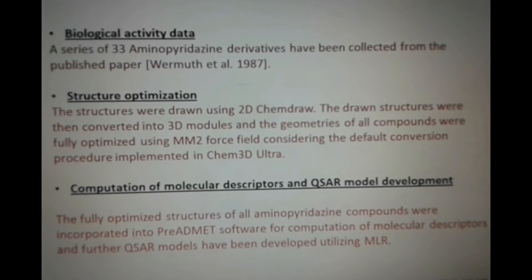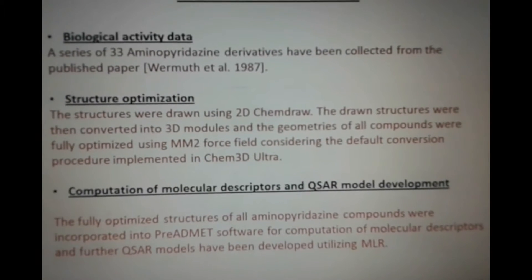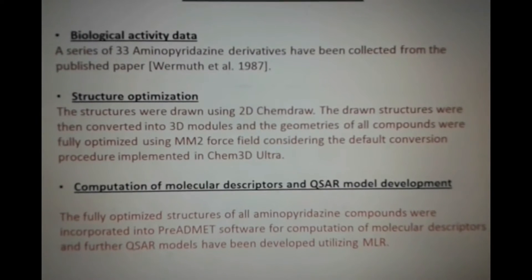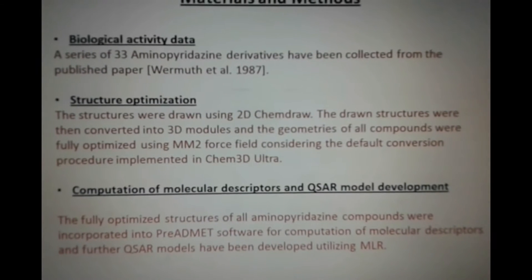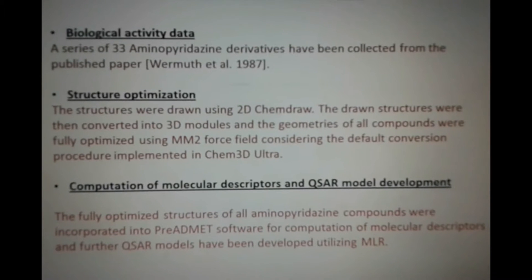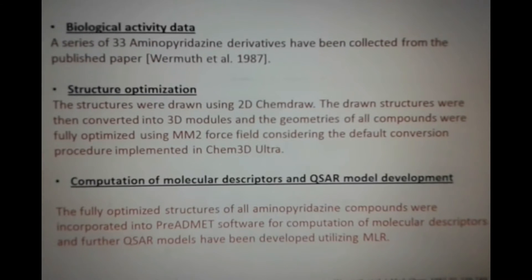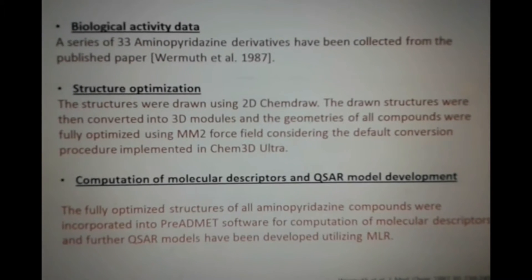A series of 33 aminopyridazine derivatives have been collected from the published literature. The structures were drawn using 2D ChemDraw and then converted into 3D modules. The geometries of all compounds were energetically optimized using the default conversion procedure implemented in 3D ChemDraw. The fully optimized structures were then imported into pre-ADMET software for computation of different molecular descriptors such as physicochemical, constitutional, and geometrical. These descriptor data were then reduced statistically.